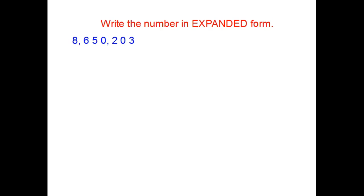Stop the video and you try it again. 8 in the millions place. 6 in the 100,000, so it's worth 600,000. 5 in the 10,000, so it's worth 50,000. Nothing in the thousands. 2 in the 100, so it's worth 200. 3 in the ones, worth 3. Get my plus signs in. And you have to have the plus signs or it's not really expanded form.